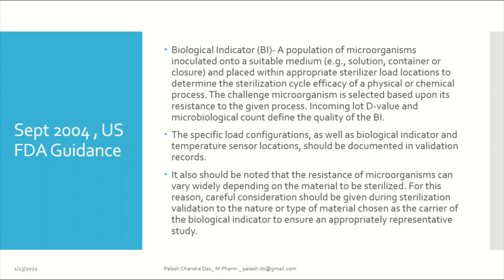Let's move to the September 2004 FDA aseptic guidance. The FDA defines a biological indicator as a population of microorganisms inoculated into a suitable medium — such as a solution, container, or closure — and placed at appropriate sterilizer load locations to determine the efficacy of a sterilization cycle using a physical or chemical process. The challenge microorganism is selected based on its resistance to the given process. The D value and microbiological count of the upcoming lot define the quality of the BI, and that is how we qualify a new lot to understand the spore count population and D value.